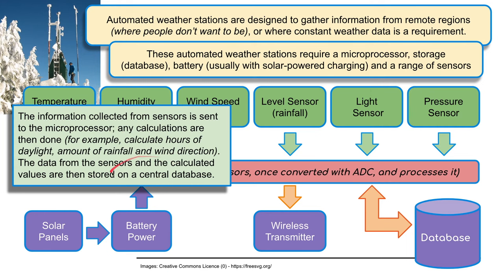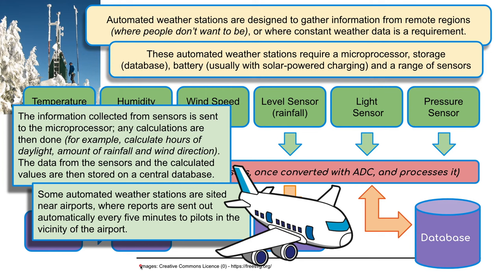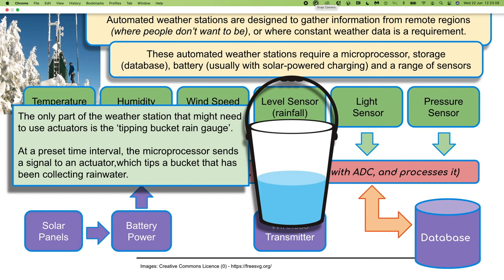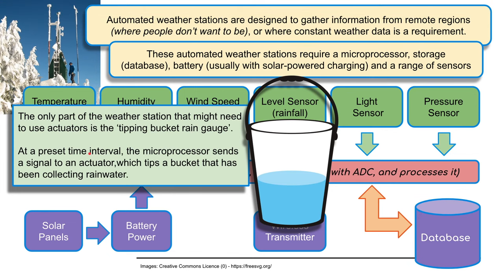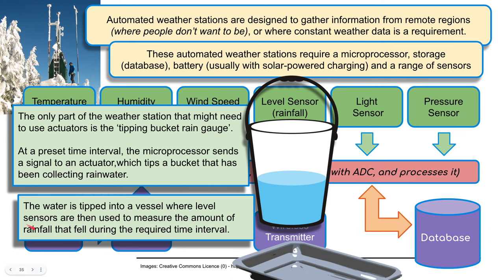These new figures can also be compared with the figures on the central database. Some automated weather stations are sited near airports, where reports are sent out automatically every five minutes to pilots in the vicinity of the airport. The only part of the weather station that might need actuators is the tipping bucket rain gauge. At a preset time interval, the microprocessor sends a signal to the actuator which tips a bucket that has been collecting rainwater. The water is tipped into a vessel where level sensors measure the amount of rainfall that fell during the required interval.